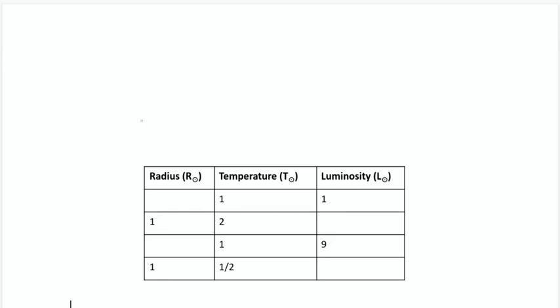All right, as you went through the background reading, you saw how luminosity, temperature, and radius of a star can be related to each other. There's a simple equation that relates them to each other, at least it's relatively simple. The luminosity of a star is equal to its radius squared times temperature to the fourth power.